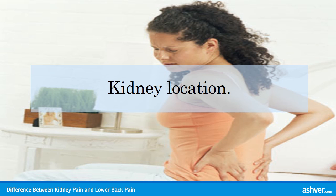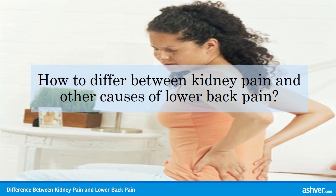In certain kidney disorders, such as kidney infection, tapping over the affected kidney triggers pain. How to differ between kidney pain and other causes of lower back pain. Kidney pain usually appears in the flanks and sometimes in the upper abdomen. Pain from kidney stones can appear in the flanks or lower left or right abdomen and can radiate toward the groin.